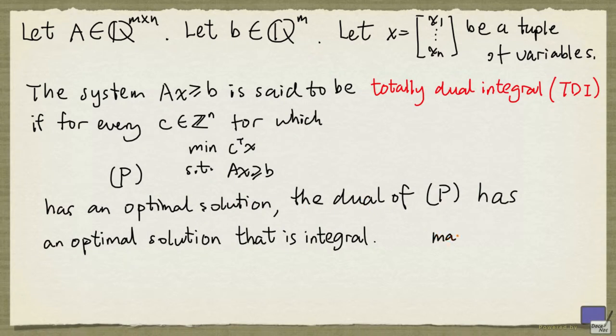Recall that the dual problem looks like this: maximizing y transpose b subject to y transpose A equals c transpose and y greater than or equal to zero.